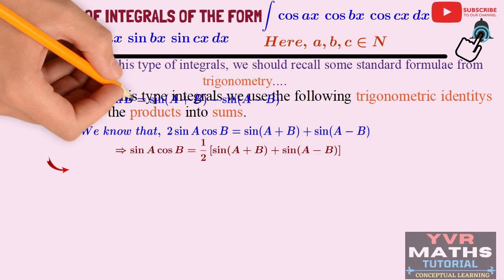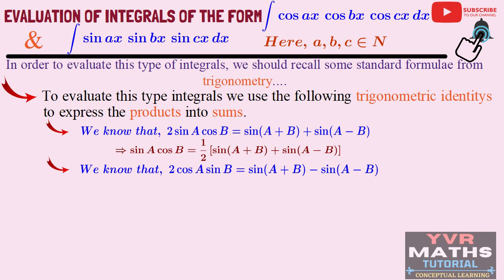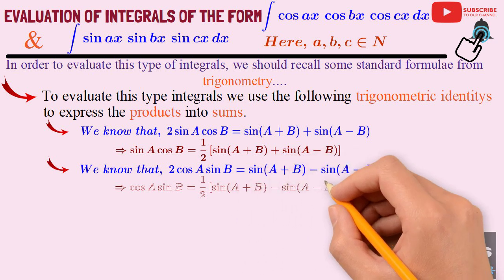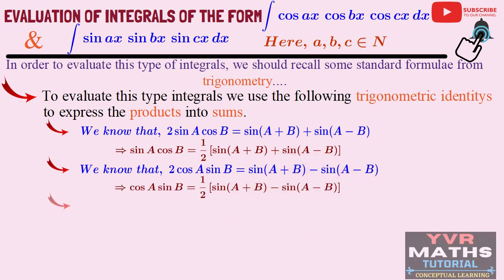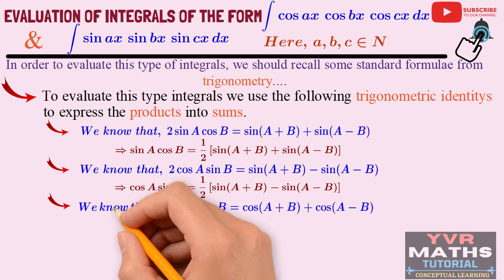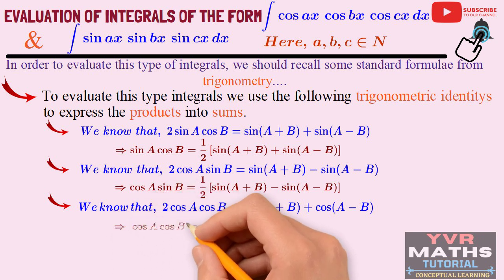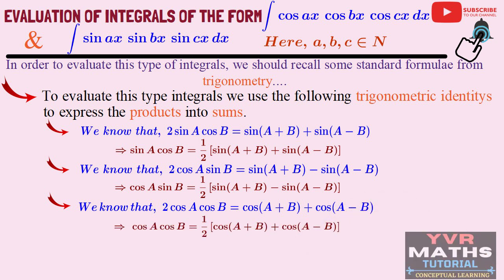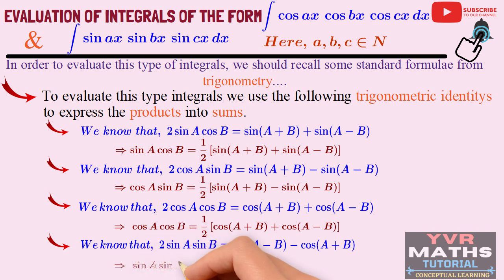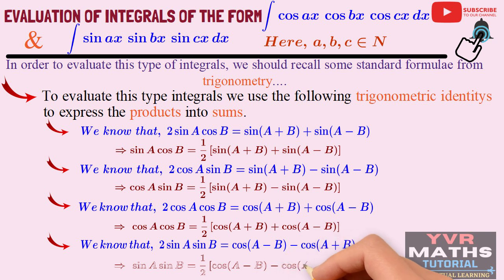The second identity: 2·cos(A)·sin(B) = sin(A+B) − sin(A−B), so cos(A)·sin(B) = ½·[sin(A+B) − sin(A−B)]. The third: 2·cos(A)·cos(B) = cos(A−B) + cos(A+B), so cos(A)·cos(B) = ½·[cos(A+B) + cos(A−B)]. The fourth: sin(A)·sin(B) = ½·[cos(A−B) − cos(A+B)].